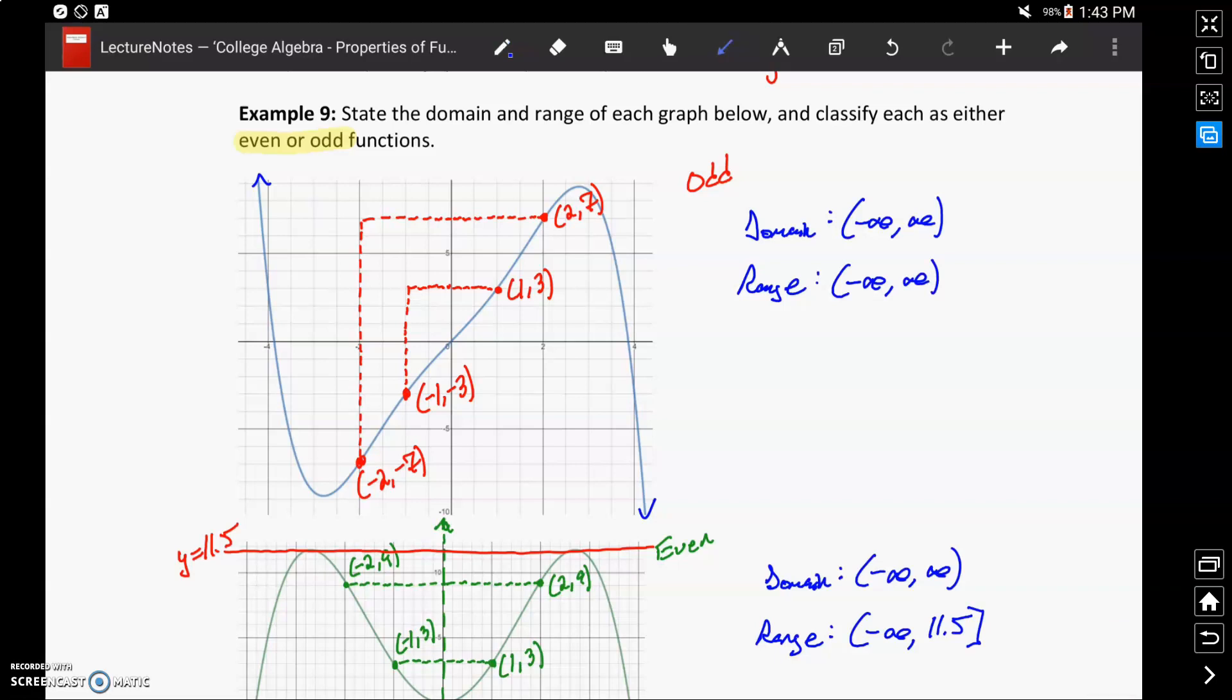But again, the new piece of information here is identifying that even or odd nature. So to have a function that's considered an odd function, every point needs to be reflected across the y-axis and then the x-axis.